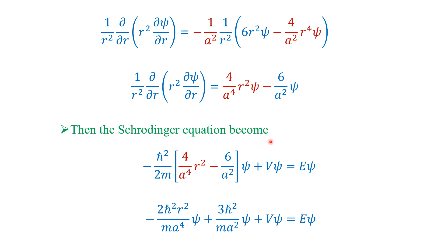The Schrödinger equation becomes: minus h-cross²/2m times [4r²/a⁴ - 6/a²]·psi plus V·psi equals E·psi. Multiplying h-cross²/2m through the bracket: the 4 and 2 partially cancel to give 2h-cross²r²/(ma⁴), and 6/2 = 3, giving: [2h-cross²r²/(ma⁴) - 3h-cross²/(ma²)]·psi plus V·psi equals E·psi.